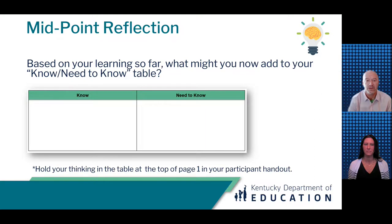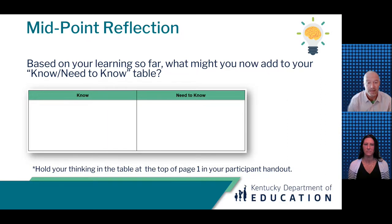Now that we are through our first two success criteria, we want to pause and give you a chance to reflect. Based on your learning so far in this module, what might you add to your know/need-to-know table on page 1 of your participant handout? This can include transferring items from your need-to-know to your know list when appropriate. Pause the video and restart after adding to your know/need-to-know table.